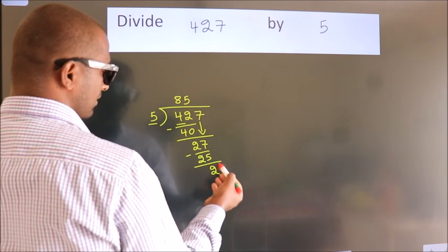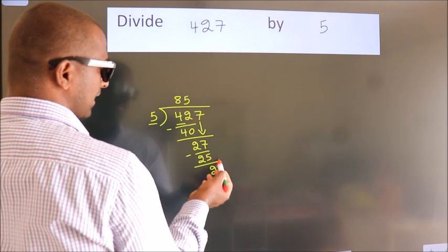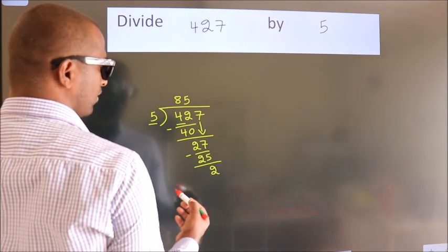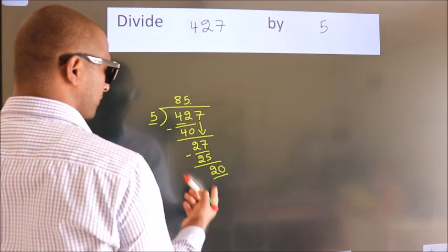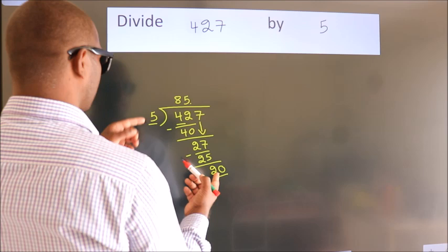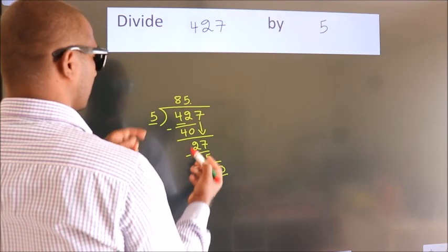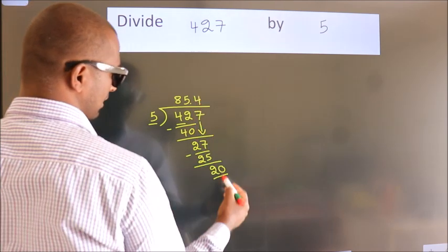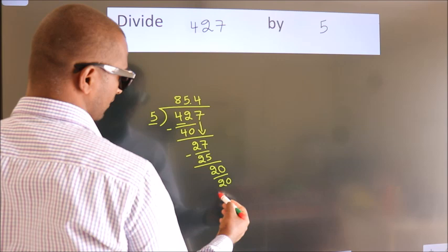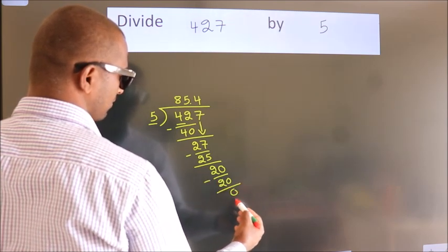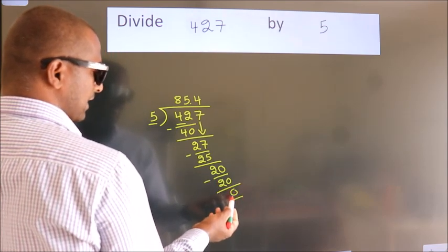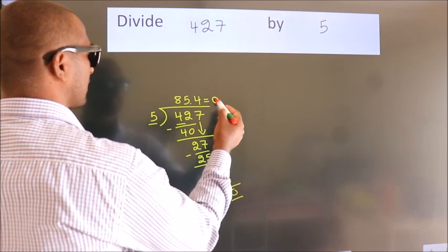After this, no more numbers to bring down. So what we do is put a dot and take 0, giving us 20. When do we get 20 in the 5 table? 5 times 4 is 20. Now we subtract. We get 0. We got remainder 0, so this is our quotient.